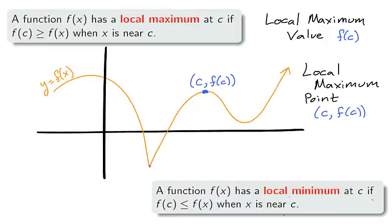When describing maximum and minimums, there is a distinction between values and points. The maximum or minimum value is the y value f of c, while the maximum or minimum point is both the x and y value (c, f of c).